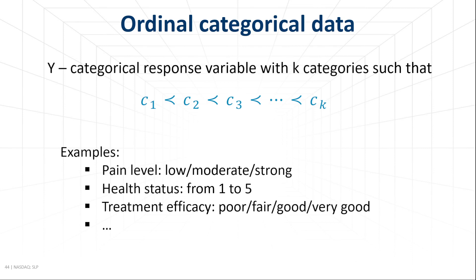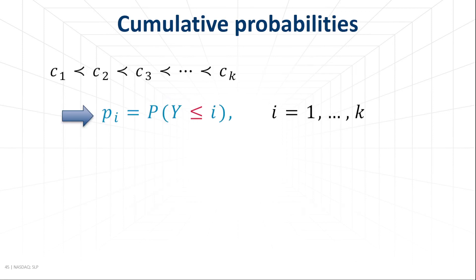For example, pain level can be described as low, medium, or strong. Patient health status can be described on a scale from 1 to 5, with 5 being completely healthy. Or treatment efficacy can be poor, fair, good, or very good. In this case, it is easier and more convenient to define a model using the cumulative probability, which takes into account the order of the categories.